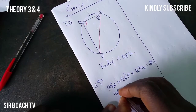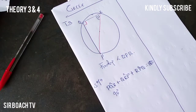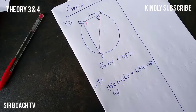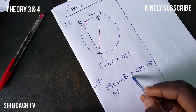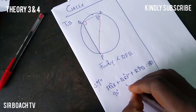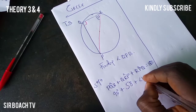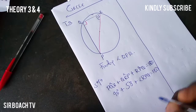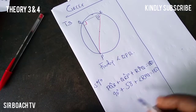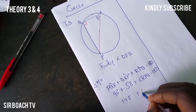We know angle PQR is 90 degrees from Theorem 3 — when a diameter sustains an angle to the circumference, that angle is 90 degrees. And we know angle QRP is 58 degrees. So when we add them: 90 plus 58 gives us 148.